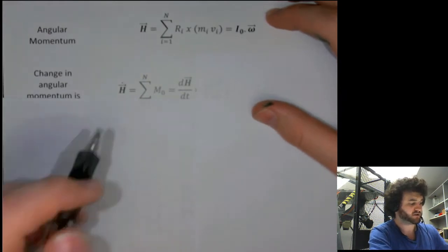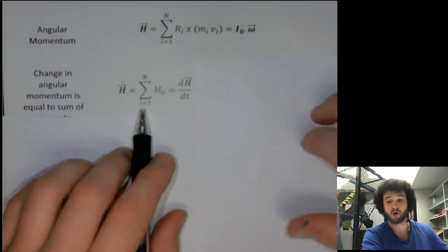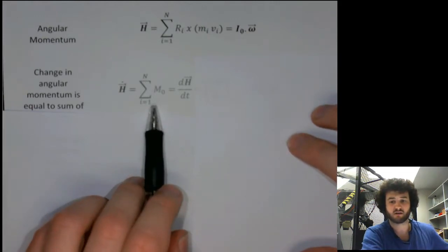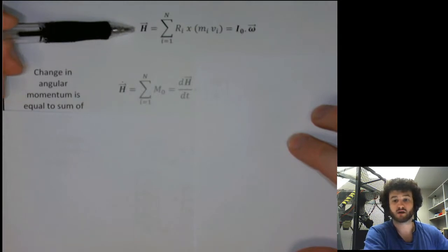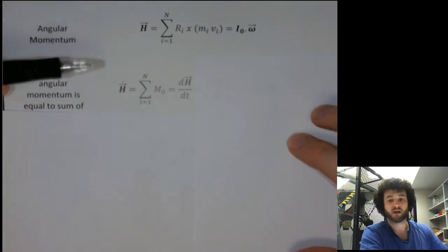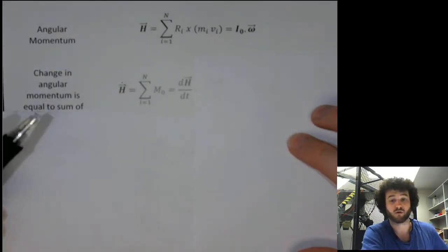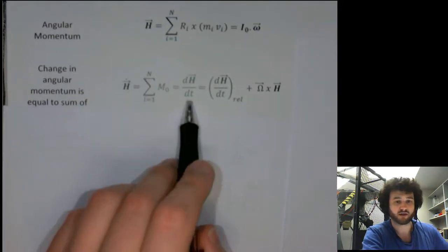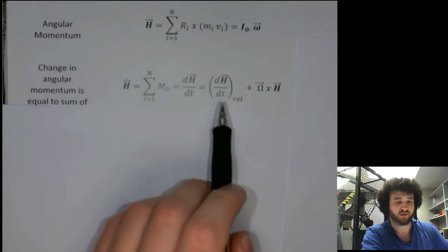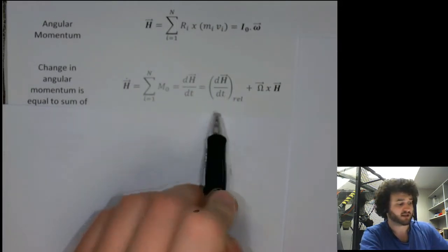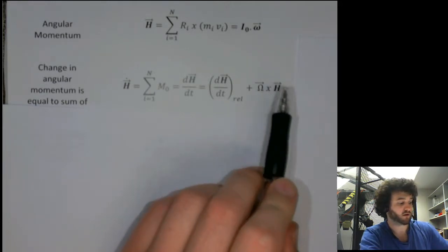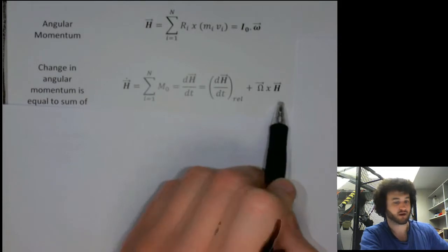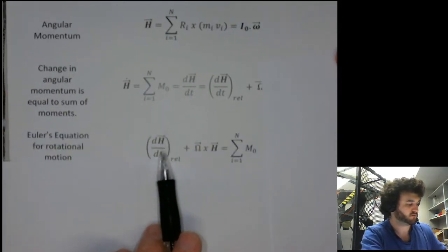Now we can relate the change in angular momentum to the moments acting on the system by taking the time derivative — h-dot is equal to the sum of the moments. If we allow our angular momentum vector to be defined in terms of some rotating coordinate frame, then the time derivative of h will be taken using the derivative operator for rotating coordinate frames that we studied previously. That is, the derivative of a vector defined in a rotating coordinate frame equals the derivative of that vector with respect to the coordinate frame, plus the angular velocity of that coordinate frame cross the angular momentum vector. This is the general form of Euler's equation for rotational motion.